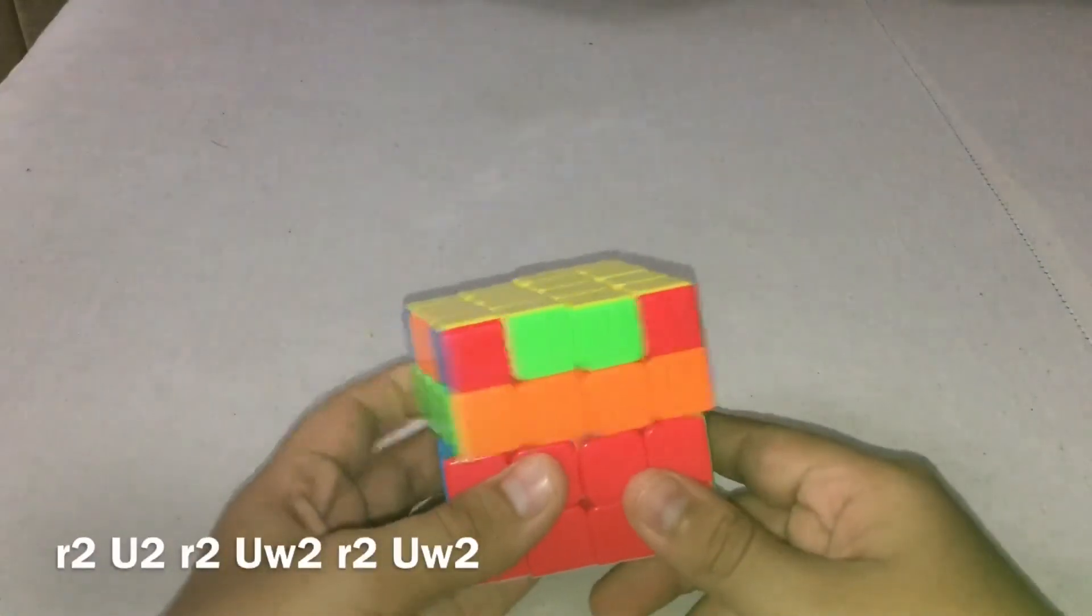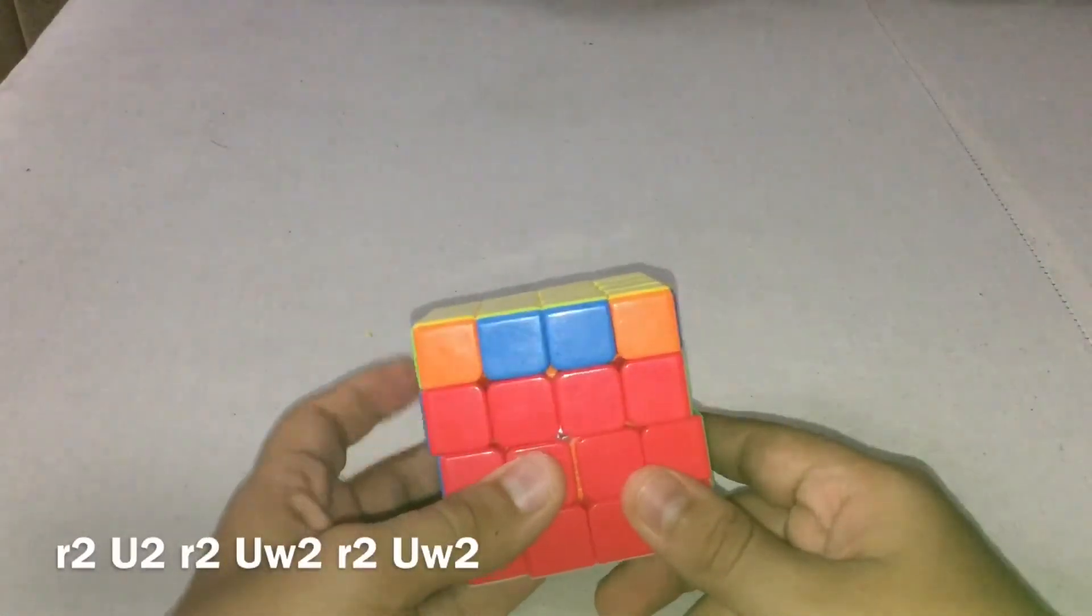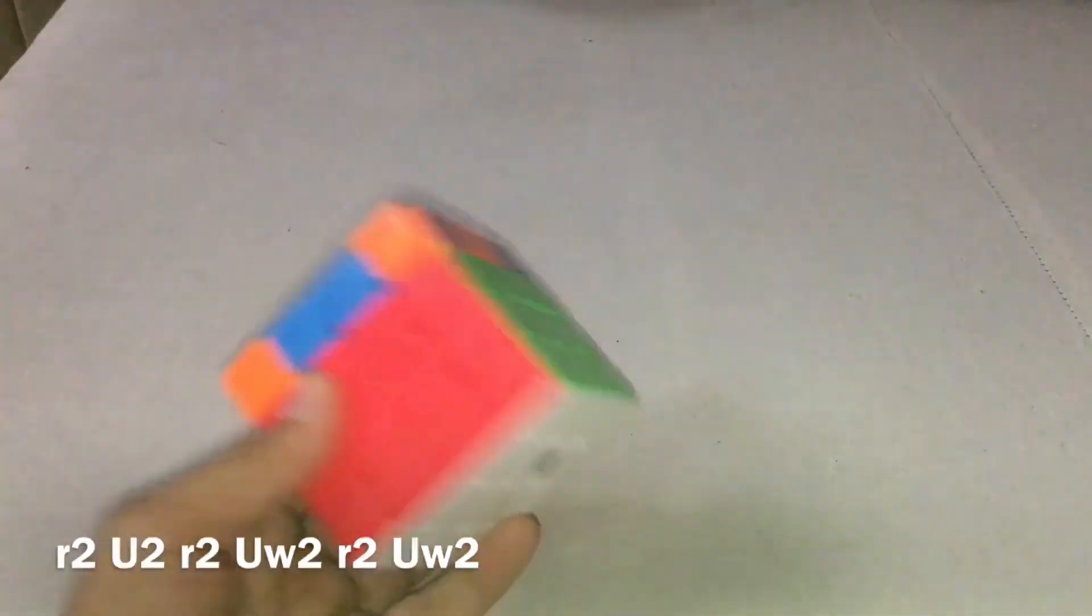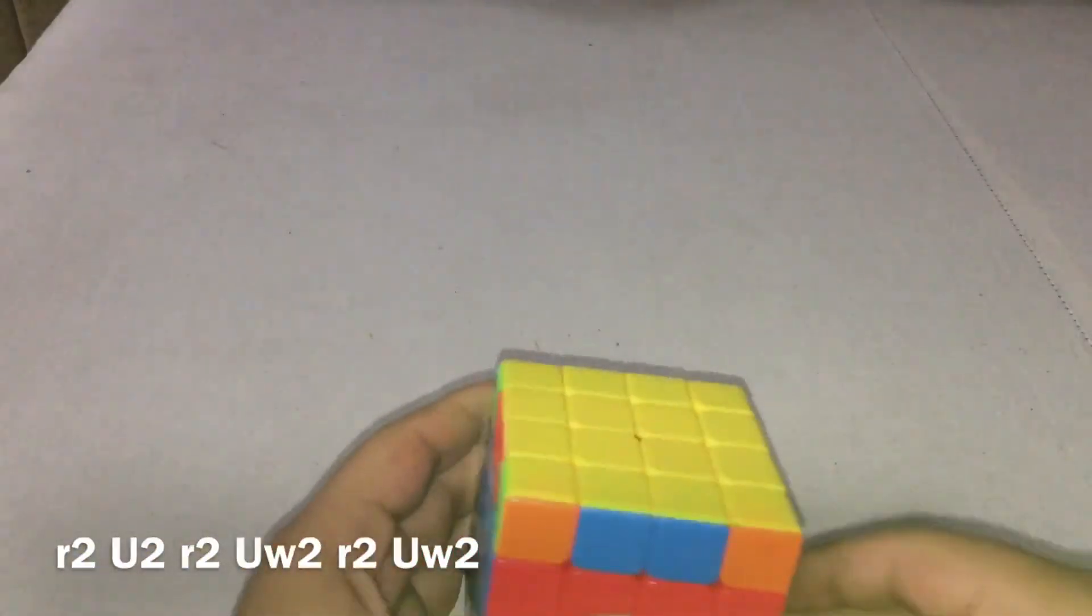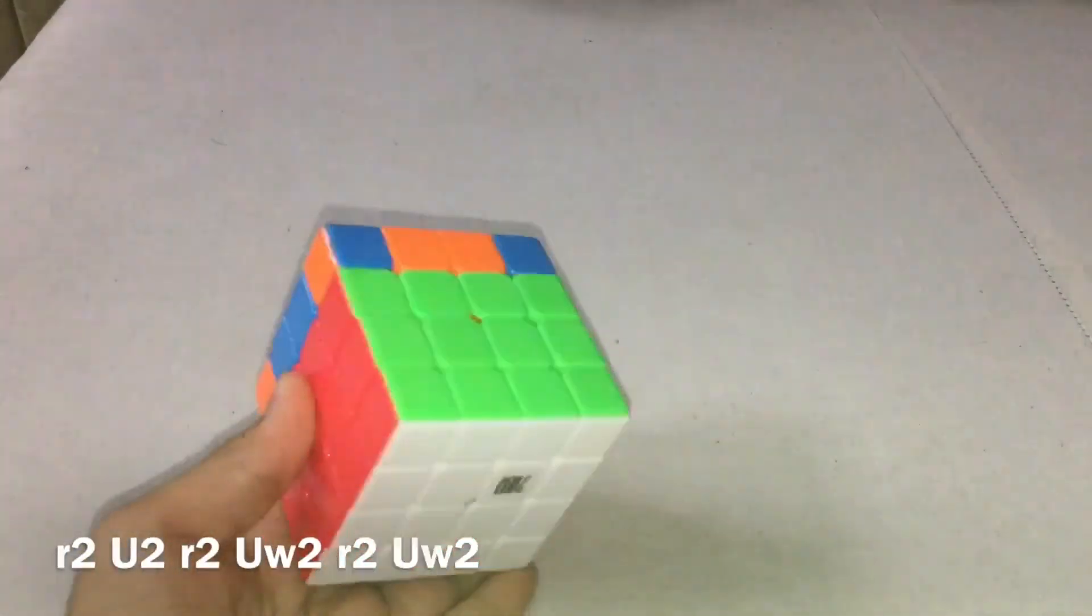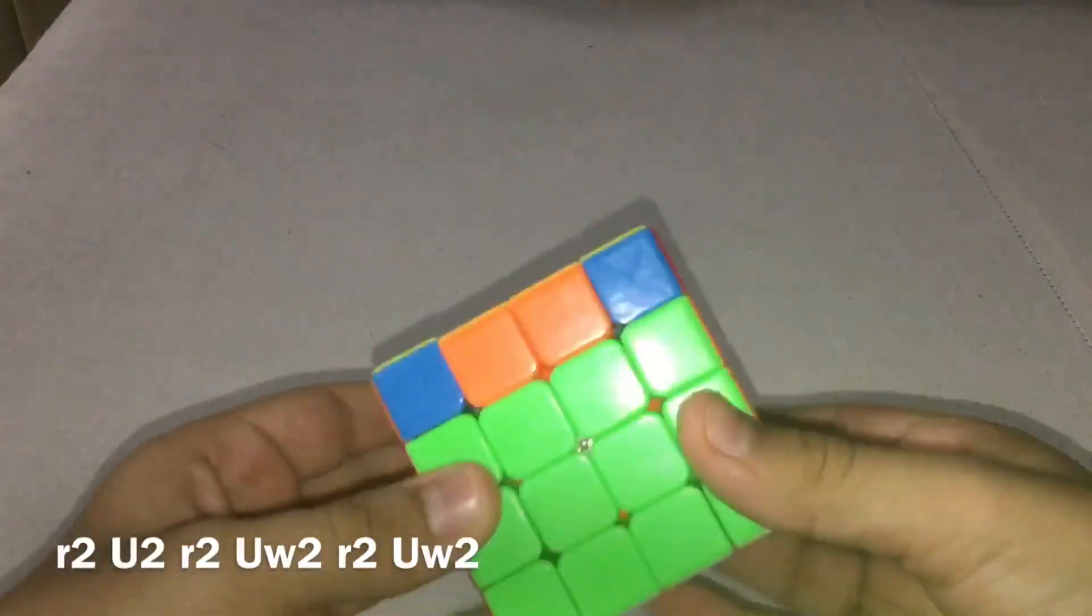And then do this U2 and then you'll get any of the three cases - H perm, Z perm, or U perm. Now we've ended up with a Z perm so I'll just end up solving it and that's the end of the parity algorithm for 4x4.